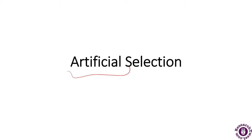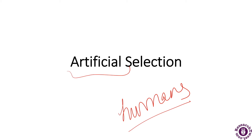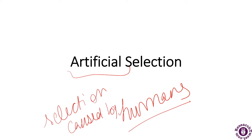The next topic we will be discussing is artificial selection. Artificial means man-made, done by humans. Artificial selection is basically a form of selection in which humans actively choose which traits should be passed on to the offspring. This process is decided by the humans — it is a selection caused by humans.